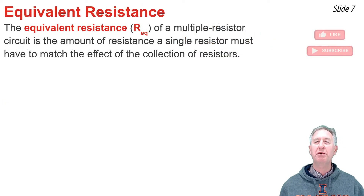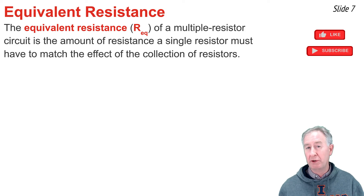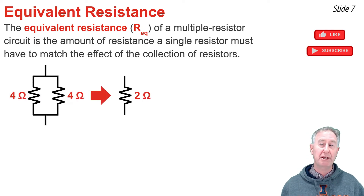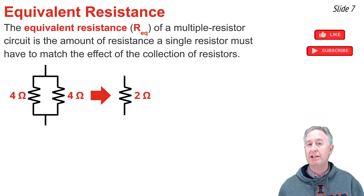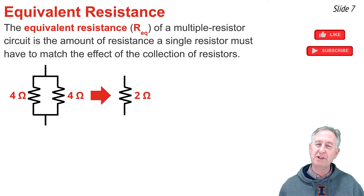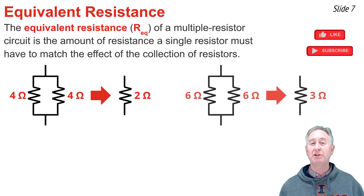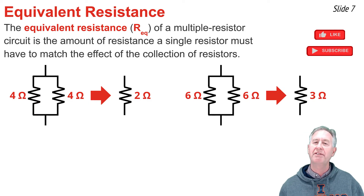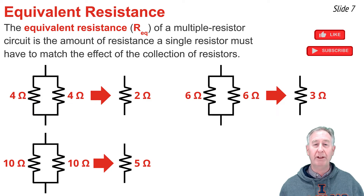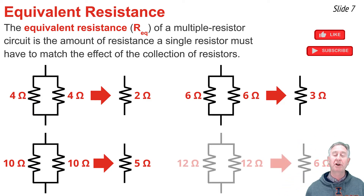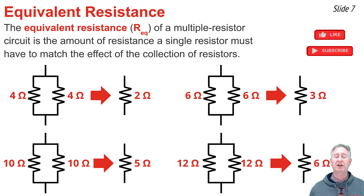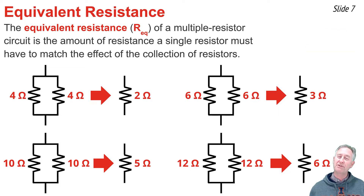The equivalent resistance of a multi-resistor circuit is the resistance a single resistor would need in order to match the effect of the collection. For example, two 4-ohm resistors in parallel act like a single 2-ohm resistor; two 6-ohm resistors in parallel give 3 ohms; two 10-ohm resistors give 5 ohms. This works well when resistors are identical, but for different resistance values we need a more sophisticated formula.